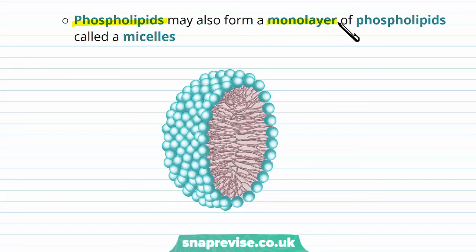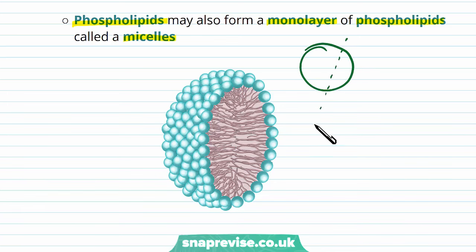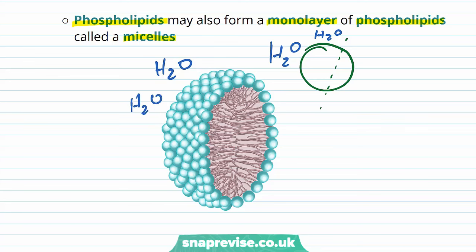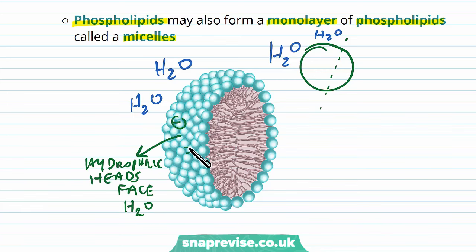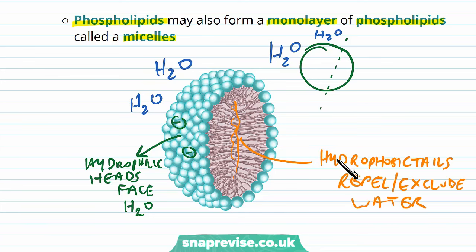Phospholipids can also form a monolayer structure called a micelle. This is a sphere-shaped structure surrounded by a watery solution. Again, the hydrophilic heads face outward toward the water because of their negative charge, while the hydrophobic tails cluster away from the water in the core of the micelle where there is no water. The tails exclude water from the center, pushing together in the middle while all of the water is attracted to the phosphate heads on the outside.